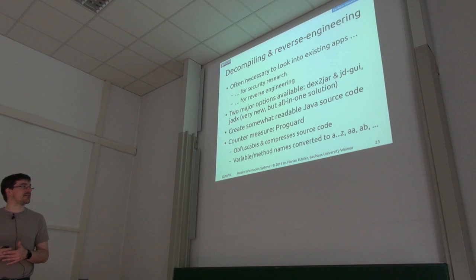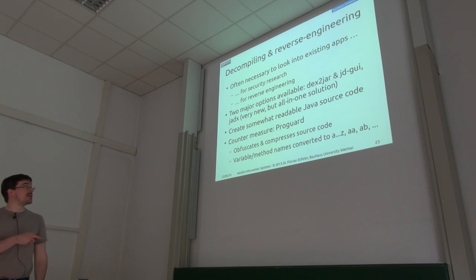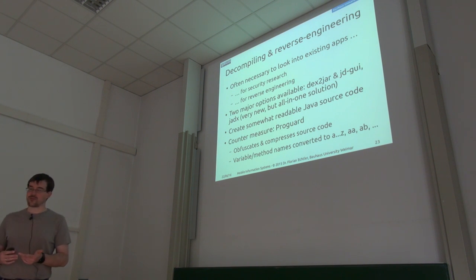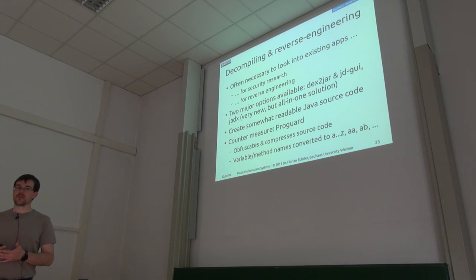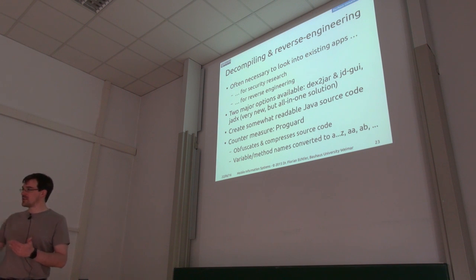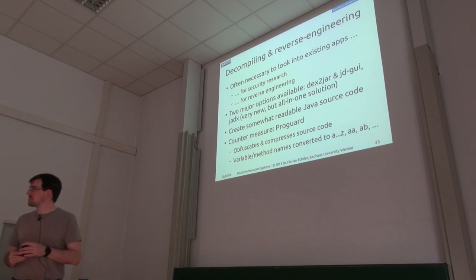What ProGuard does is, across the board, rename all the variables and methods to A, B, C, D, E, F, G, and so on, then continue with AA, AB, and so on. So you can't actually get back any information from the names of the methods and variables. That's actually very effective — if you look at decompiled source code after it's been treated by ProGuard, it's a lot more difficult to make sense of it than if you could still see the variable and method names.